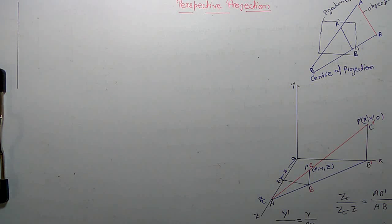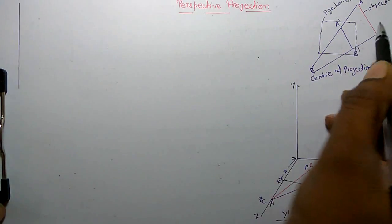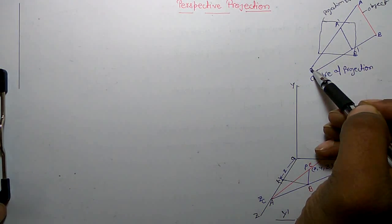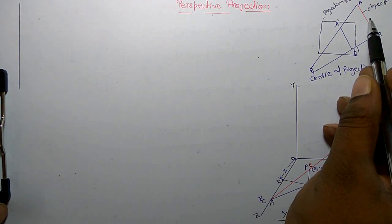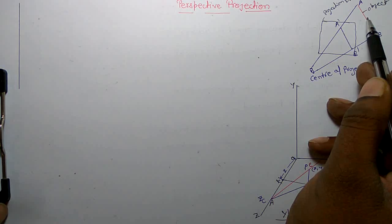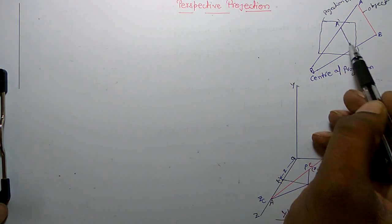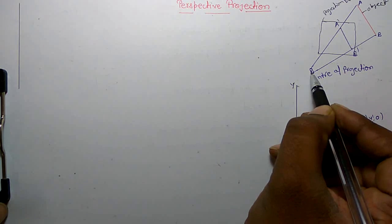We are going to learn perspective projection. In perspective projection, it appears that projectors are converged at a single place. This is the object, and this is the projection plane. The object is projected on the projection plane as A-dash B-dash, and this is the center of projection.